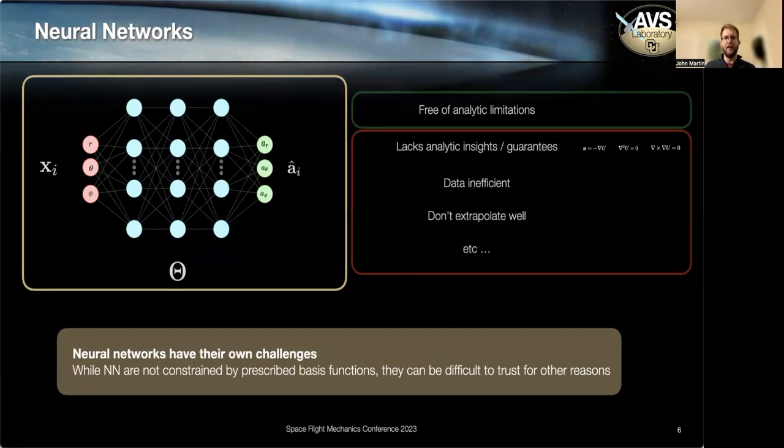But the drawbacks of this choice is that we suddenly lose all of these analytic guarantees. We can't guarantee that this neural network is a solution to Laplace's equation. Neural networks are also typically quite inefficient to train, need lots of data. And even once trained, they can perform poorly as soon as you leave the bounds of that training data. They don't extrapolate very well.